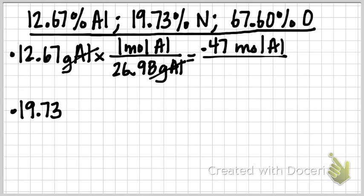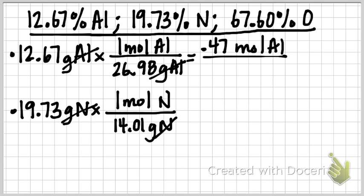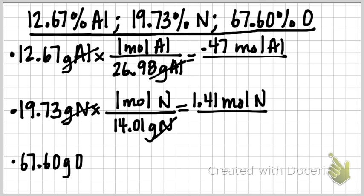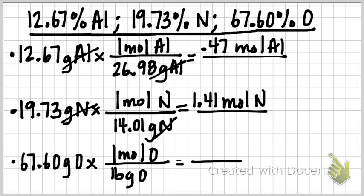For your next one, you have 19.73 grams of nitrogen. We're going to convert that as well. One mole of nitrogen is 14.01 grams of nitrogen. My grams of nitrogen cancel. 19.73 divided by 14.01, that's 1.41 moles of nitrogen. And last but not least, you have 67.60 grams of oxygen. I'm going to convert that to moles. One mole of oxygen is 16 grams of oxygen. My grams cancel, I'm left with moles of oxygen. 67.6 divided by 16 is 4.23 moles of oxygen.